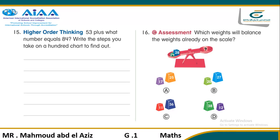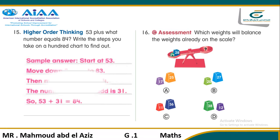53 plus what number equals 84? Write the steps you take on the 100 chart to find out. We can start at 53 and move down three rows to 83, then move ahead 1 to 84. The number we need to add is 31. So 53 plus 31 equals 84.